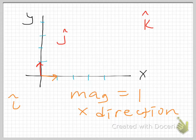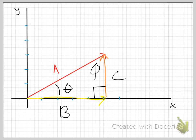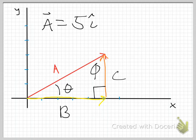With that in mind, what if I write that vector A equals 5 units in the X direction, which I write as 5 times i-hat — since i-hat has magnitude 1 and lies in the X direction, this says I've gone 5 units in the X direction — plus 3 units in the Y direction. So vector A equals 5 i-hat plus 3 j-hat. We'll unpack this more in later videos.